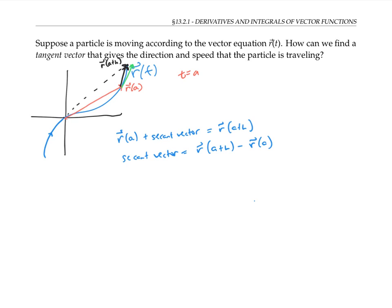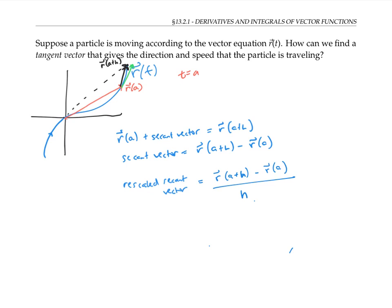Since I want my limiting vector to have the appropriate direction and length, instead of taking these direct secant vectors, I'm going to use rescaled secant vectors, whose length is always the average speed that the particle goes between these two points. To get that rescaled secant vector, I'll take the difference of my two position vectors and divide by the difference in time, which is h.